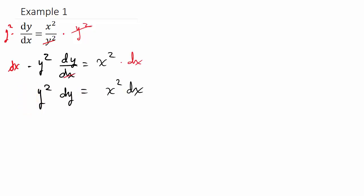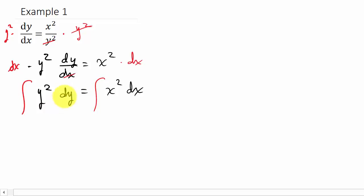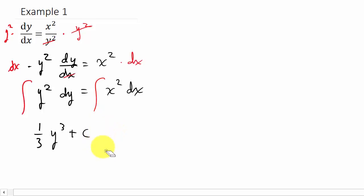Now to solve this, all I'm going to do is integrate both sides. These integrations are easy — you should know how to do this. Integrating the left side gives one-third y cubed plus c1, and that equals one-third x cubed plus another constant, let's call it d.